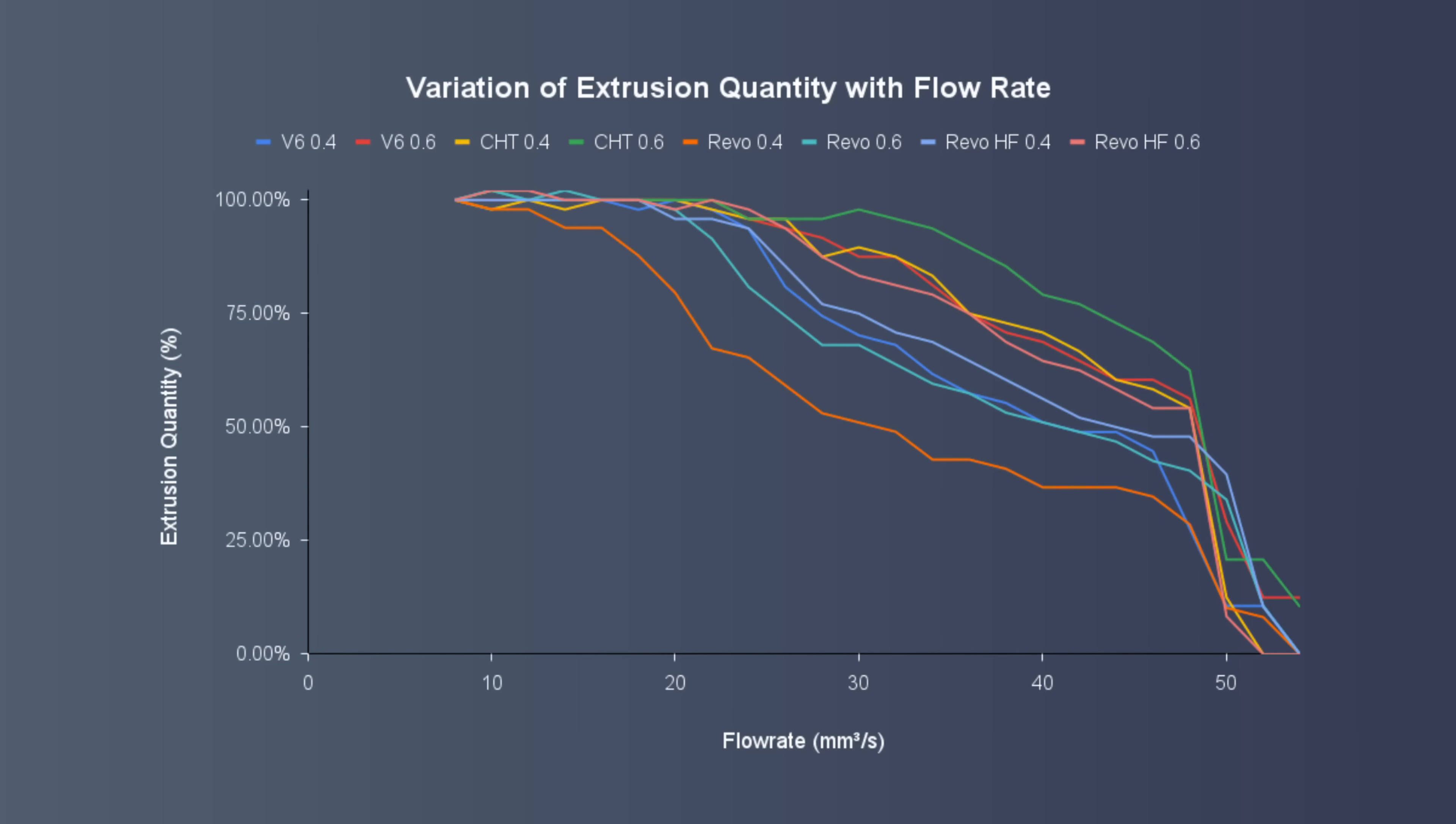So here are the results. Starting with the V6 0.4mm nozzle on the Phaetus Rapido, you can see how increases in flow rate don't result in much deviation from perfect extrusion until around 20mm cubed per second where under-extrusion begins to creep in. Comparing this to a 0.6mm V6 nozzle you can see a slight improvement in performance, but of course the internal nozzle design is very similar so we wouldn't expect huge gains.